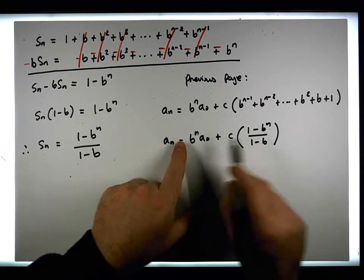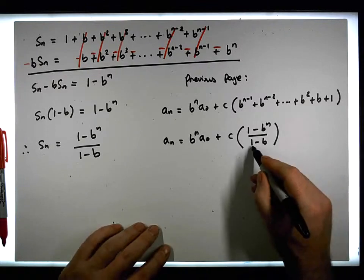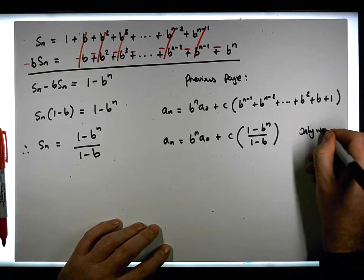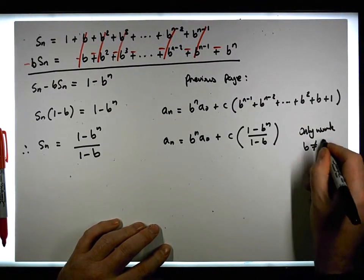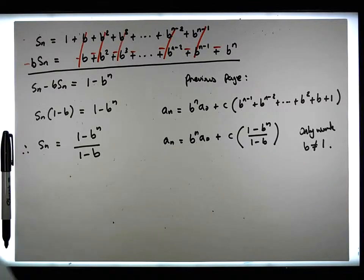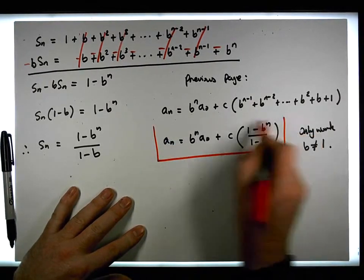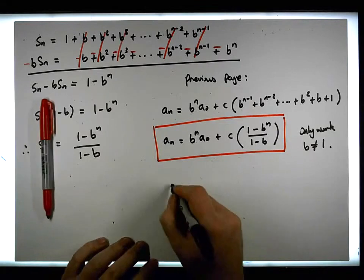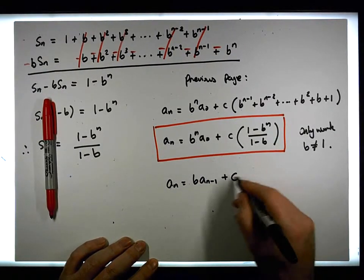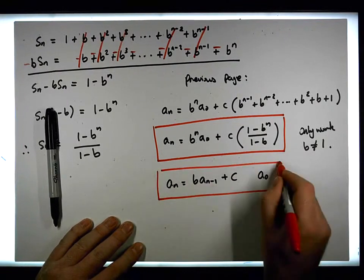We could simplify further, but let's leave it at that. The key point to note is that we're dividing by one minus b, so this solution only works when b is not equal to one. What we've identified here is a closed-form solution for the recurrence a_n equals b times a_{n minus one} plus c, where a zero is a specific given value.